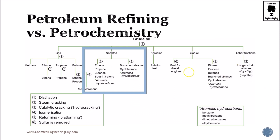Crude oil is part of petroleum refining, and crude oil can have a gas section — which is methane, ethane, propane, and butane — or a kerosene section, gasoline section, gas oil, diesel, and other fractions, maybe even heavier fractions.